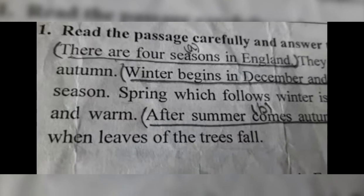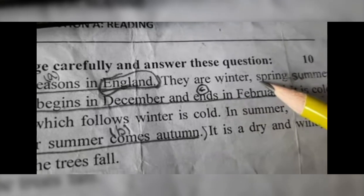Next question: Pick out two nouns from the passage. What is the naming word? The naming word is England. Second naming word is winter, spring. In December, February — the name of winter, spring.